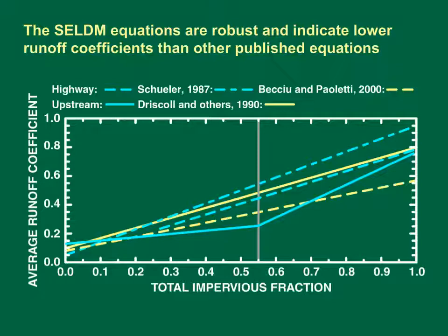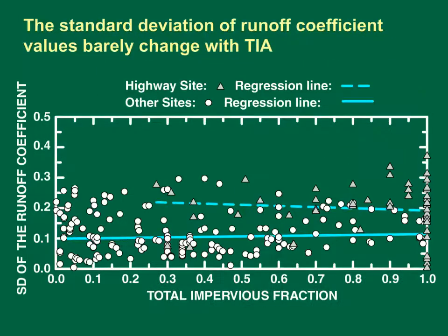Furthermore, the two-segment model used for upstream sites eliminates the effect of highly impervious surfaces on the slope of runoff coefficients for sites with low TIA values. This graph shows the standard deviation of runoff coefficients on the vertical axis and the impervious fraction on the horizontal axis. The dashed line is the regression relation for highway sites, shown as triangles, and the solid blue line is the regression model for non-highway sites, shown as white circles. The standard deviation of runoff coefficient values barely changes with TIA; these slopes are not statistically significant.